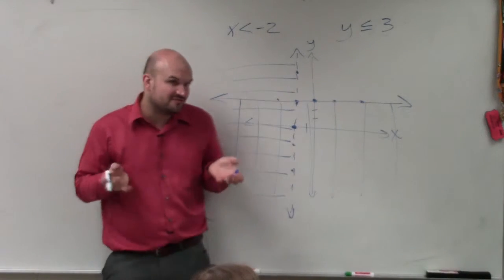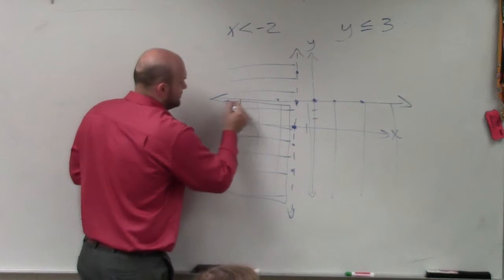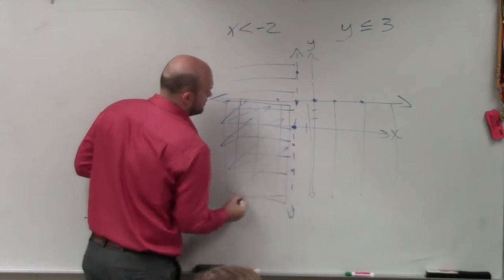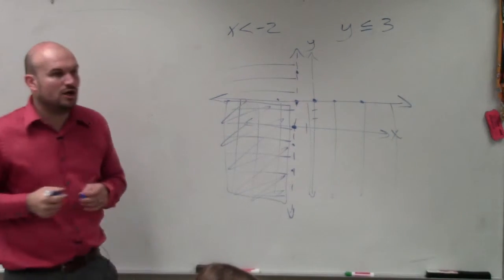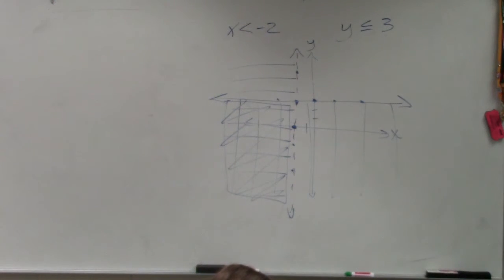So basically, the feasible region where both of my inequalities are true is going to be this area here. And that's what we call our feasible solution. OK? Right now, all you guys are basically doing is just graphing and shading. And that's it.